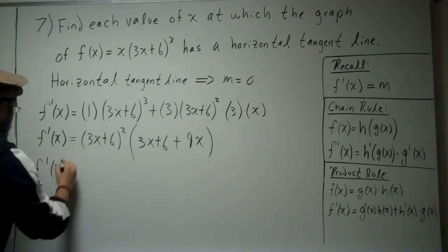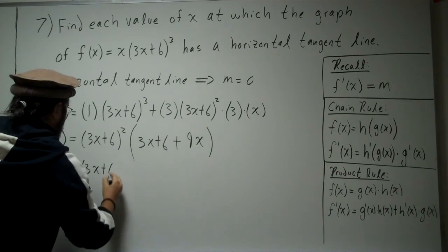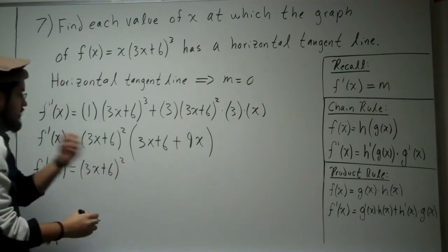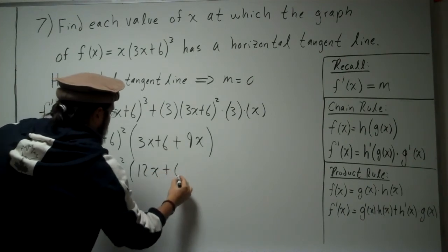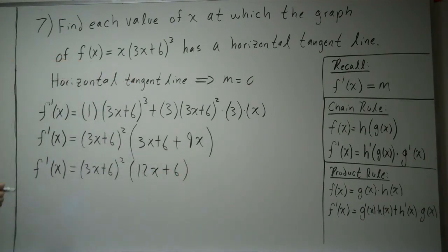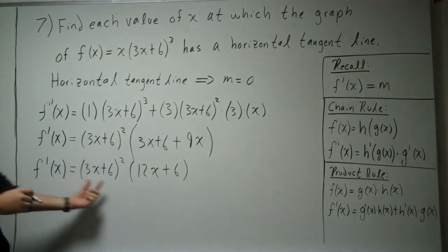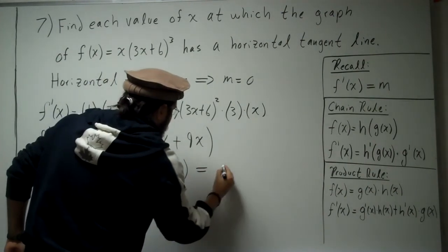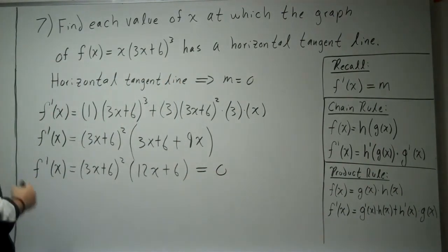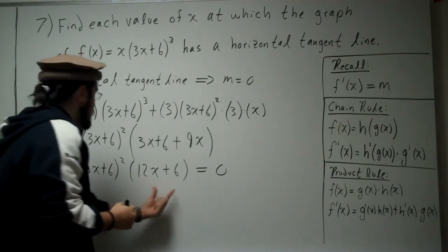So f'(x) is equal to (3x+6)² times (12x + 6). That's factored. We know the horizontal tangent line must equal 0, so we set this equal to 0 and solve for x. If you have something times something equal to 0, that means this factor is 0 or that factor is 0.